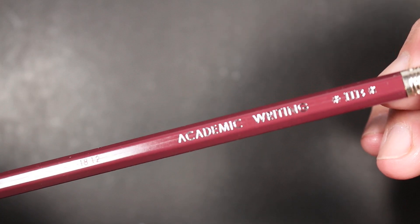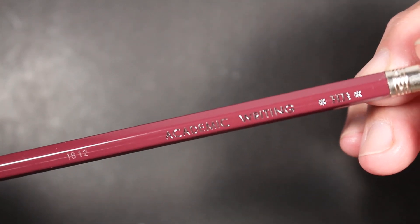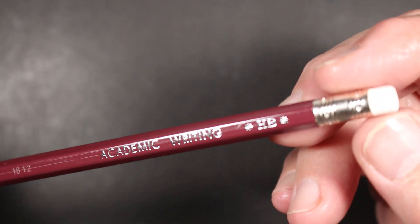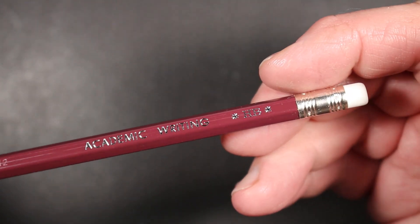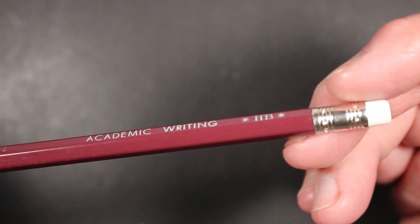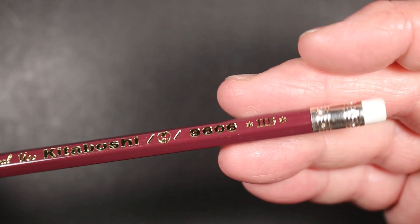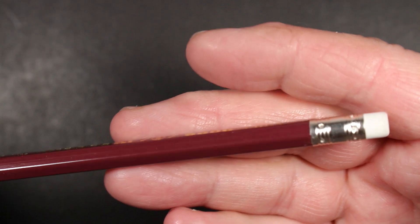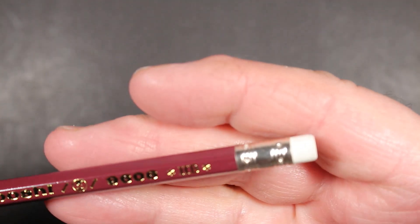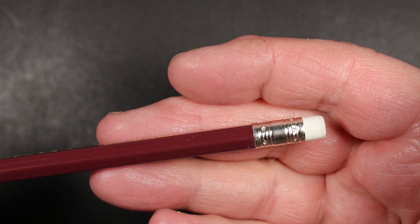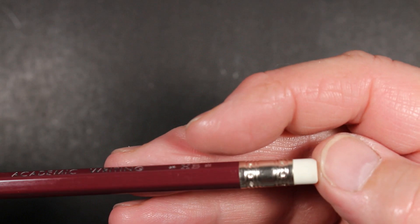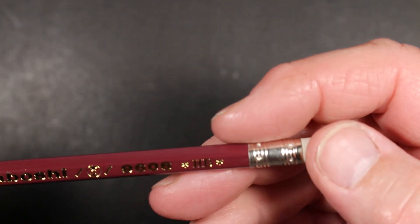That says academic writing HB, so general use, academic writing. I'm guessing that they're saying this is a school pencil, certainly can be used for that, or general use office pencil. HB, so basically a pencil for many different applications. It's silver and gold foil as the imprint. You have a really handsome ferrule that's crimped on here at the end of the pencil with a white eraser.